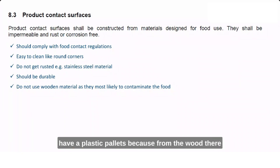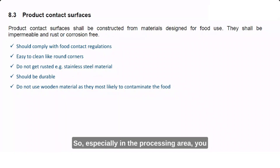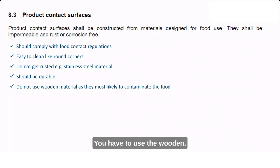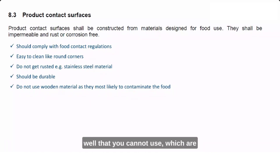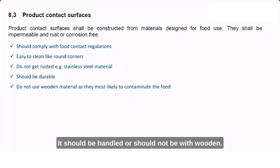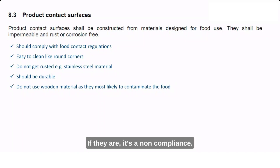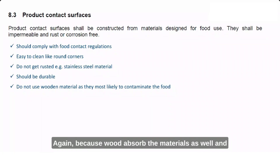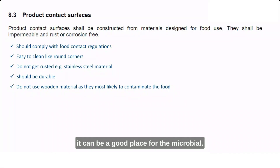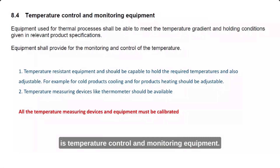There are other equipment items not allowed in the facility as well, such as knife handles made of wood — these must not be used. Wood absorbs materials and can harbor microbial growth. The microbes are not visible but they grow on such surfaces and can cause food safety issues.